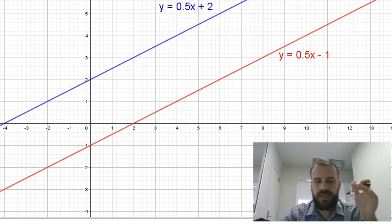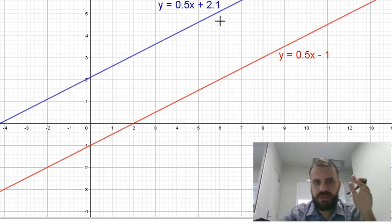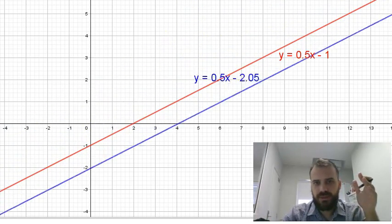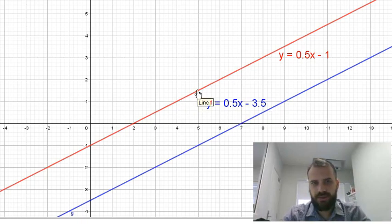Now as you can see, as I move this line up, its c value changes, which you'd expect. That's its y intercept. But its gradient does not. You can see no matter if I move it up, I move it down, as long as these two lines are parallel, they have the same gradient.